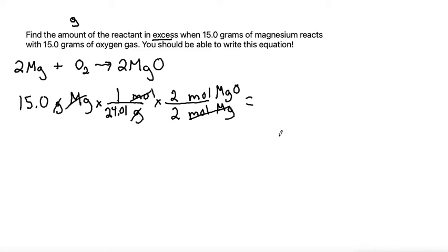So grabbing my calculator, I'll take 15 divided by 24.01 times 2 divided by 2, and that gives me 0.62474 moles of magnesium oxide. So this is how much we can produce if all of the magnesium is reacted.